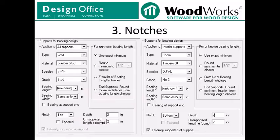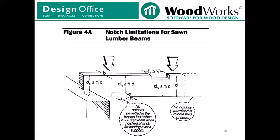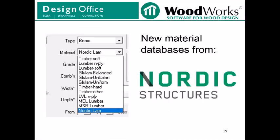I just want to mention some updates to the notch design. In the past, it was only possible to input notches at the end supports, but now if you have a multi-span beam, you can specify a notch at the interior supports. And we'll go over an example when we get into the demonstration. The limitations for the size of the interior notches for solid sawn beams is provided in figure 4A of the NDS 2015. Take note that the program follows the limitation that no notches are permitted in the tension zone when the width B is greater than 3.5 inches.